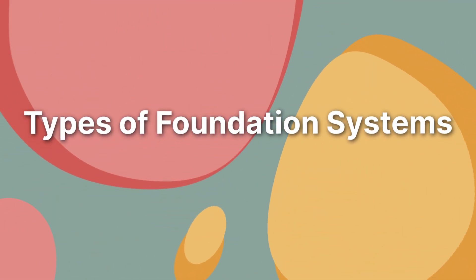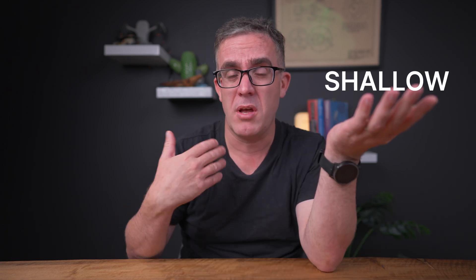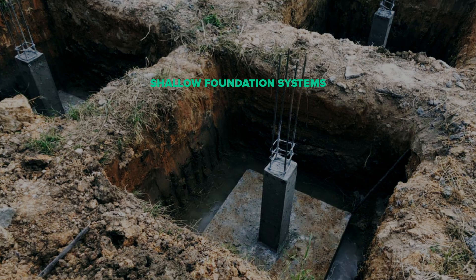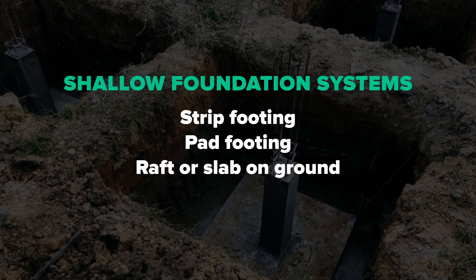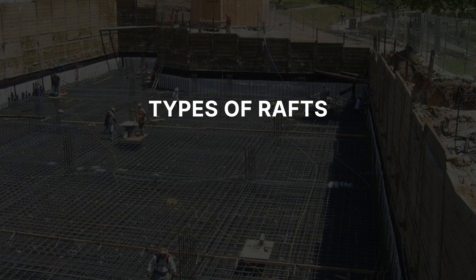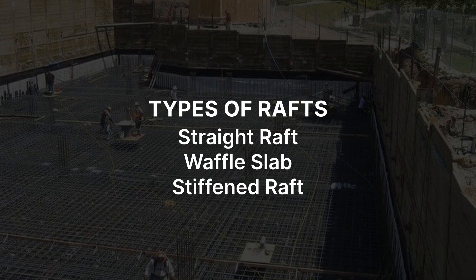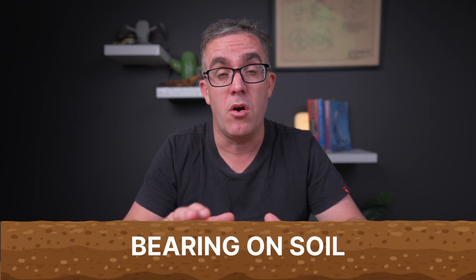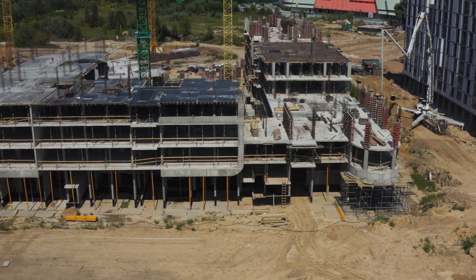What are the types of foundation systems? They really sit in two camps: shallow foundation systems and deep foundation systems. Examples of shallow foundations include a strip footing, a pad footing, a raft, or a slab on ground. A raft can sit in a number of different camps — either a straight raft, waffle slab, or a stiffened raft. They all fundamentally fall into the same category: they're bearing on soil, the soil is quite good and has sufficient bearing capacity, and you don't need anything below. So they're suited to either smaller buildings or sites with really good soil.